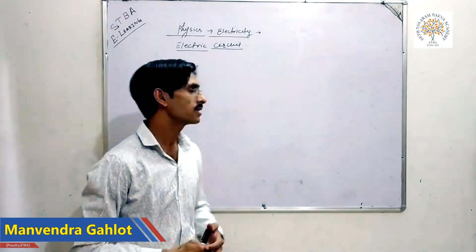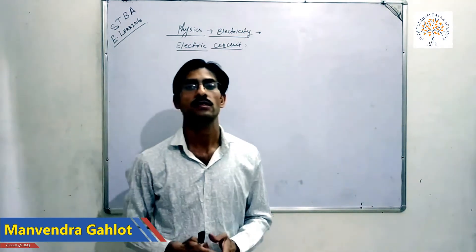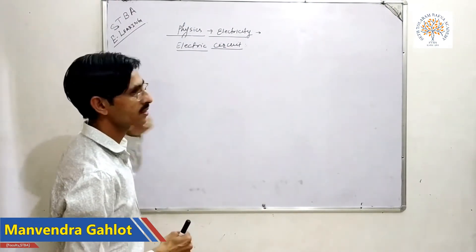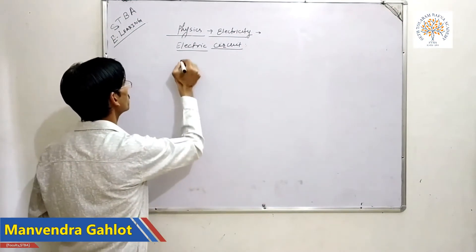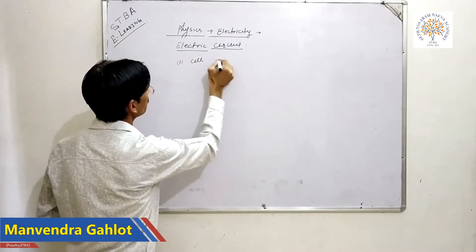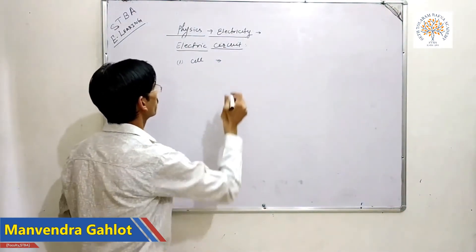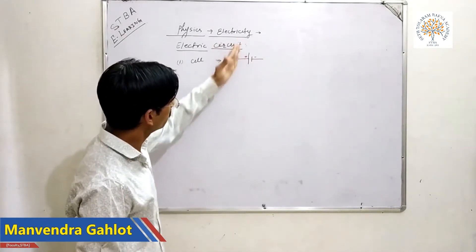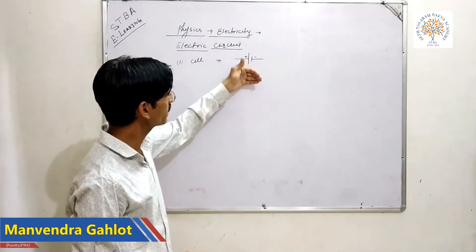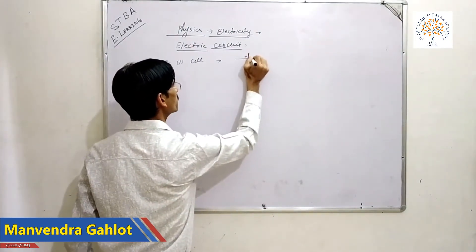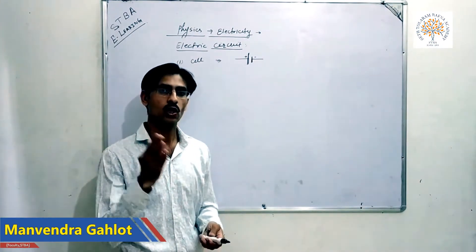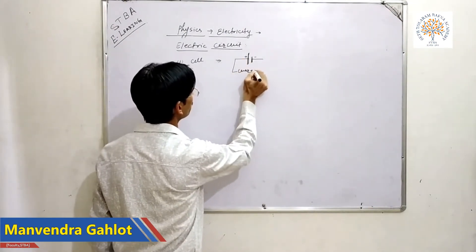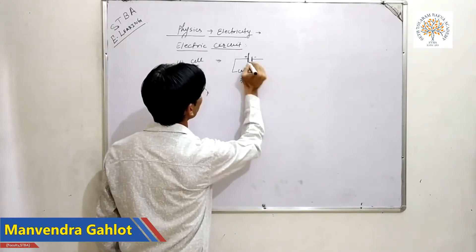Let me start with the symbols of different electrical appliances. First, the cell: in physics, the symbol of a cell has two lines — a big line indicating the positive terminal and a small line indicating the negative terminal. Current always flows from the positive terminal to the negative terminal.